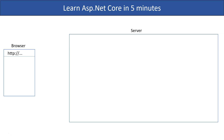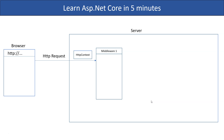In ASP.NET Core, once the request is routed to the web server, the HTTP request is then encapsulated in the HTTP context object. After that, the context object is passed through one middleware after another.